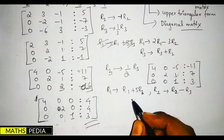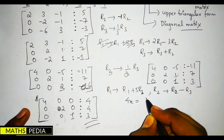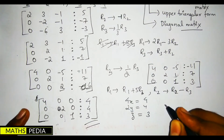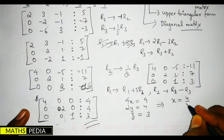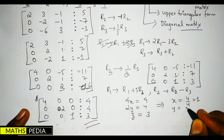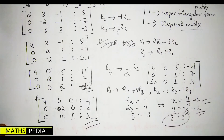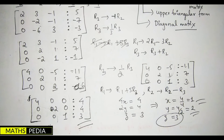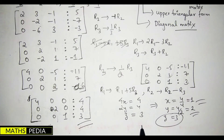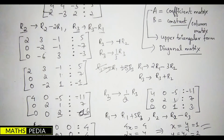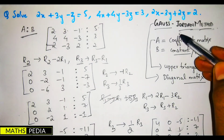Now I write the equations from the diagonal matrix: 4x = 4, 2y = 4, and z = 3. So x = 4/4 = 1, y = 4/2 = 2, and z = 3. These are the final answers. The key difference from Gauss elimination is that here we convert to a diagonal matrix instead of upper triangular form, making back-substitution unnecessary. This is the solution by the Gauss-Jordan method.